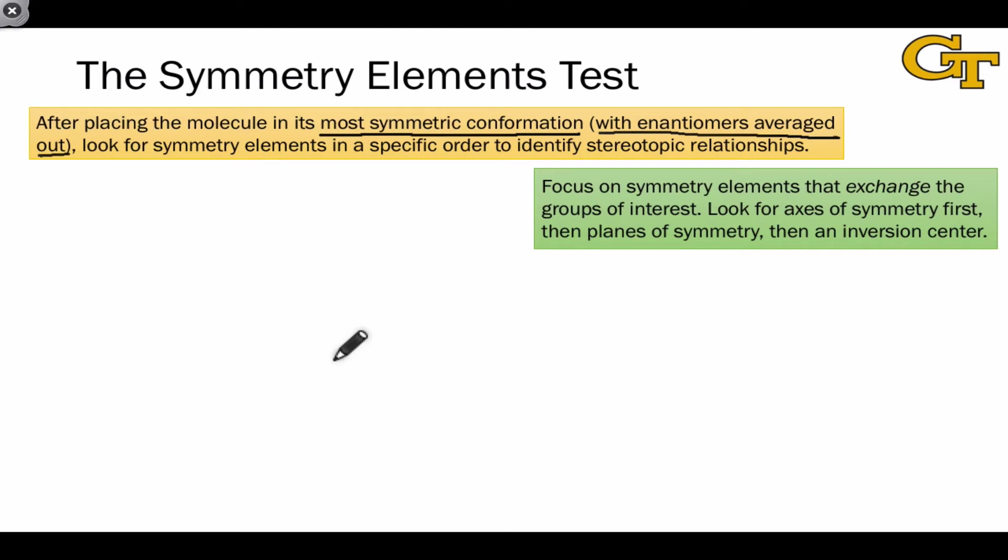After placing the molecule in its most symmetric conformation with enantiomers averaged out, we want to look for symmetry elements in a specific order to identify stereotopic relationships, focusing on those that exchange the groups of interest. We first look for rotational symmetry, axes of symmetry, followed by planes of symmetry, and finally, as a last resort, inversion centers.